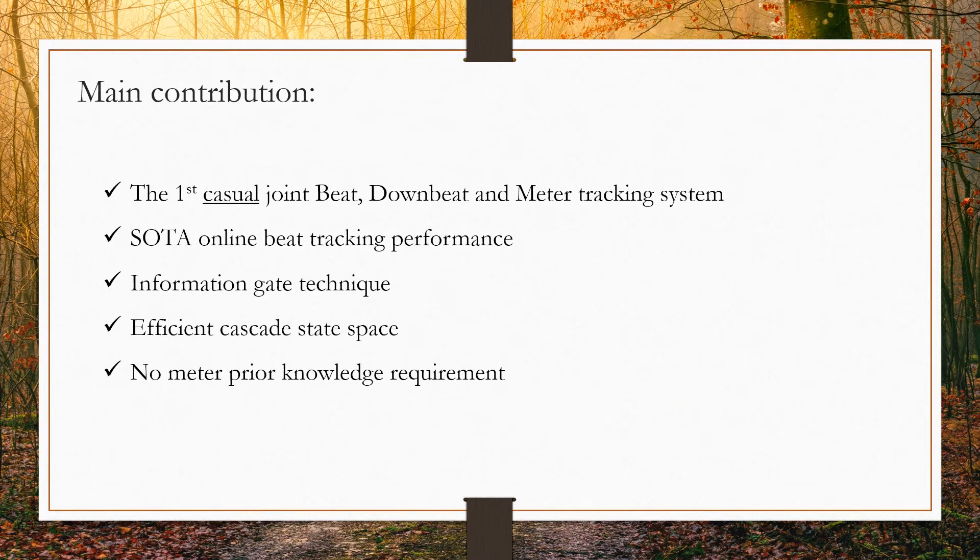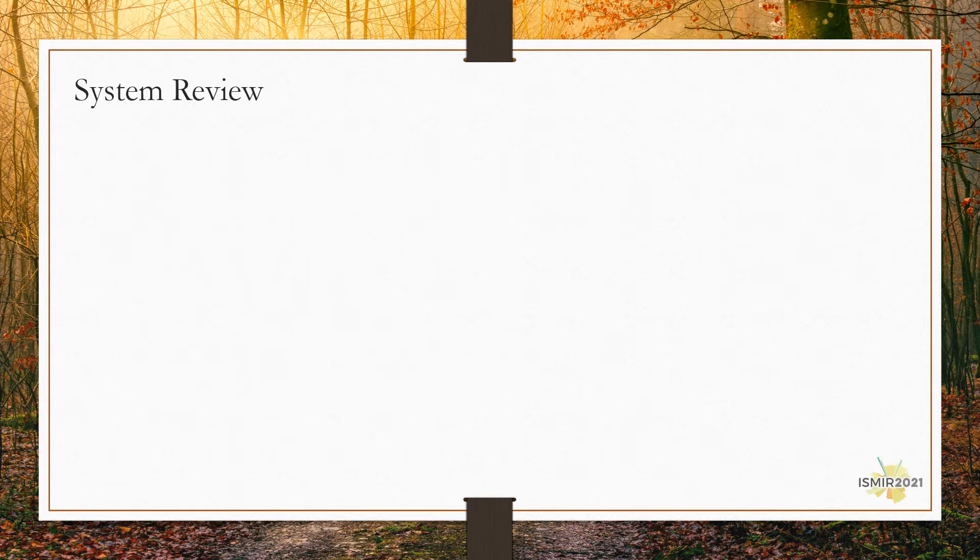Let's take a look at our main contribution quickly. To our best knowledge, BeatNet is the first causal joint beat, downbeat and meter tracking system. It also delivers the state-of-the-art online beat tracking performance. The proposed information gate makes the inference process much faster than the baseline sampling rate models. The utilized cascaded state space is much smaller than the baseline efficient model and the system doesn't need to be primed with the time signature to perform downbeat tracking and is instead able to estimate the meter and adjust the predictions over time.